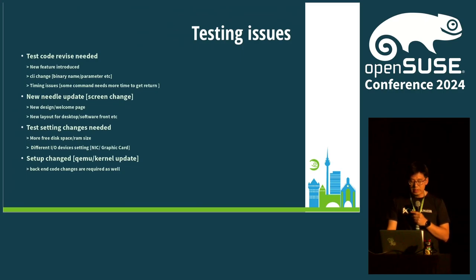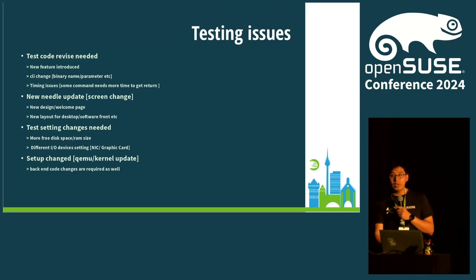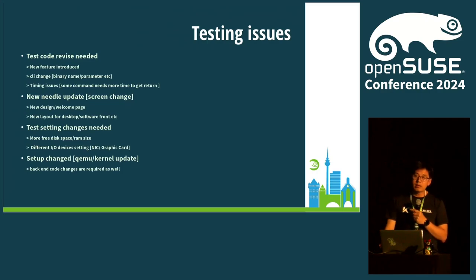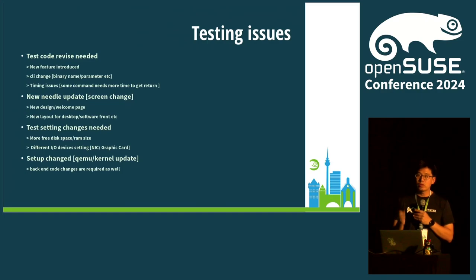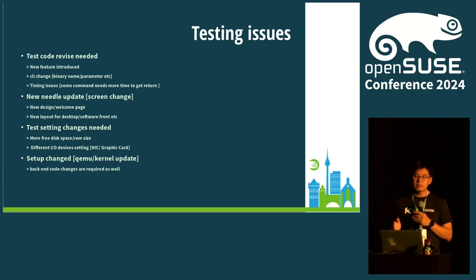The last important type is setup changes or upgrades. For example, we have some QEMU backend or some password backend running our tests. In general, we can't always keep our test environment in the old status — we should apply security patches and kernel updates, which will cause software updates as well. If we have a QEMU update, the backend commands may change. In this case, we should also change our test code accordingly.